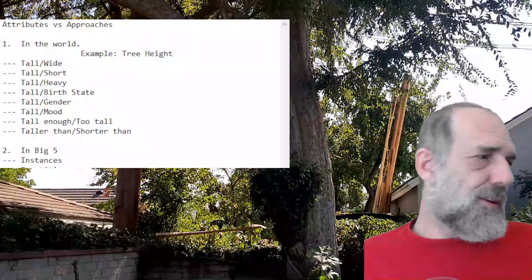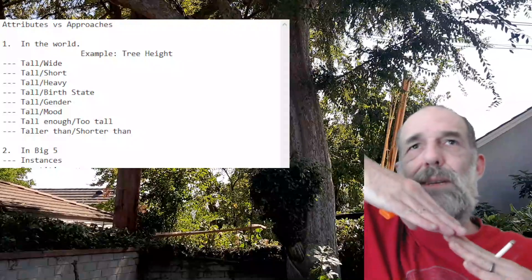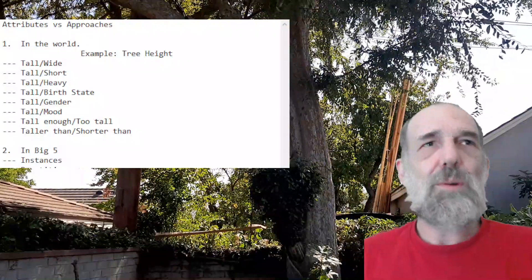Now, in contrast, if you think about something like a teeter-totter, if you push one end down, the other end goes up. So, when we're talking about Big Five, we're talking about instances.